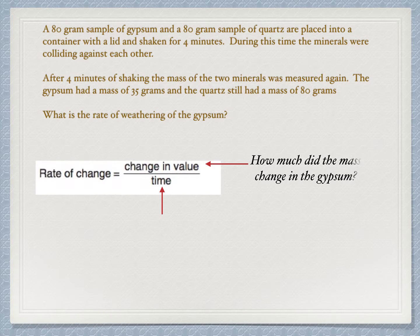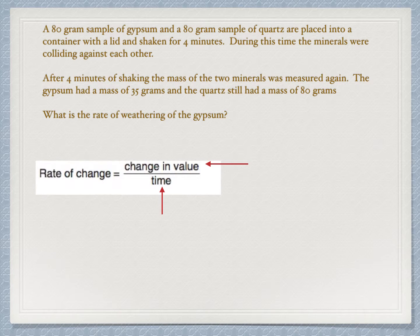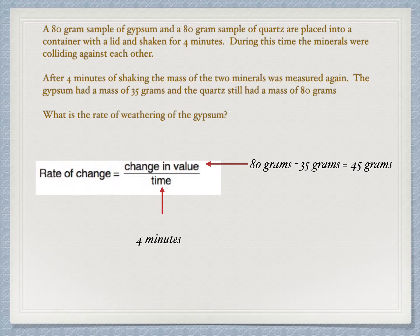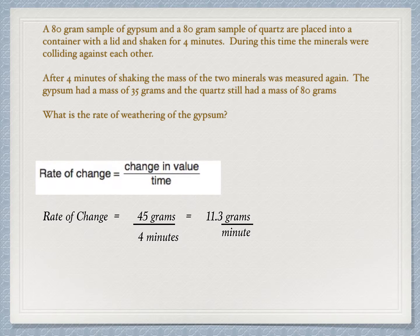Same formula again — each time you must identify the change in value and the time. How much did the mass of the gypsum change, and over what length of time? To get that change, it started with 80 and ended with 35, so 80 minus 35 grams gives us 45 grams. The time is 4 minutes. So the rate of change is 45 grams over 4 minutes. 45 divided by 4 is 11.3, and our units are grams per minute. The basic idea of the problem doesn't change — it's what we're substituting in and the units that matter.